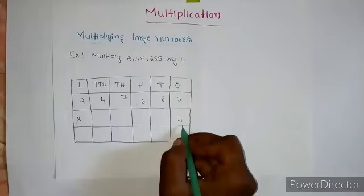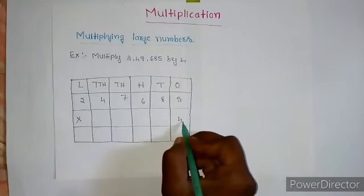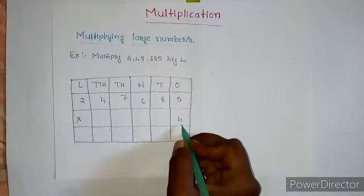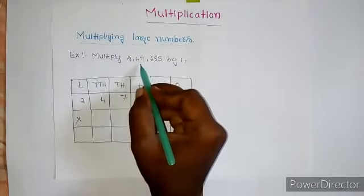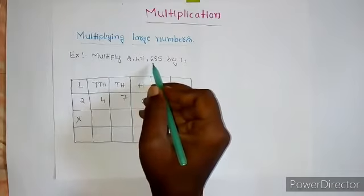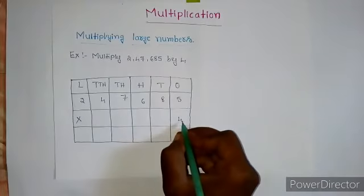For multiplication of large numbers, we are first multiplying by ones column. Now I am going to multiply 2,47,685 by 4. All of you see here: